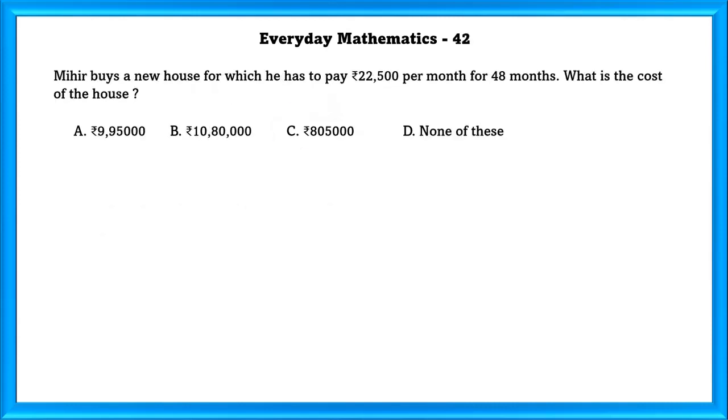Mathematics Question Number 42: Mihir buys a house for which he pays 22,500 rupees per month for 48 months. What is the cost of the house?